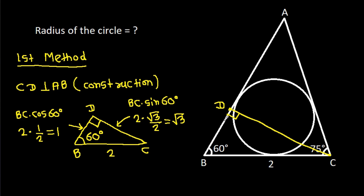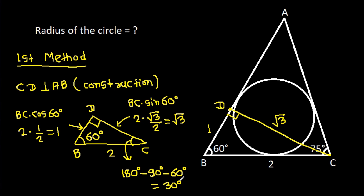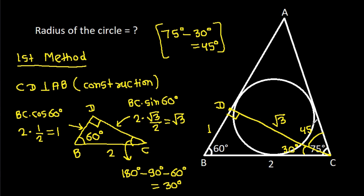We get BD = 1 and CD = √3. Also, angle BCD = 180° − 90° − 60° = 30°. So angle ACD = 75° − 30° = 45°.